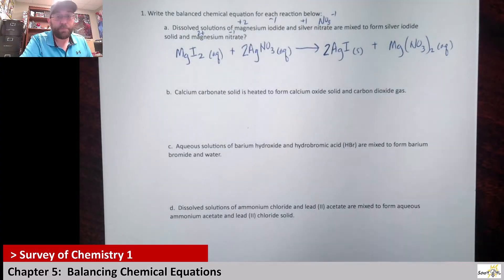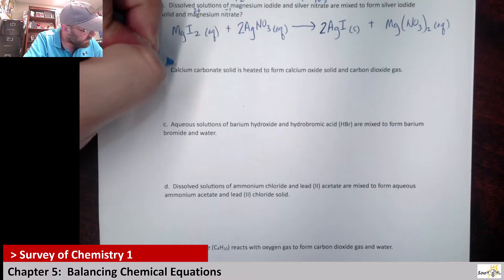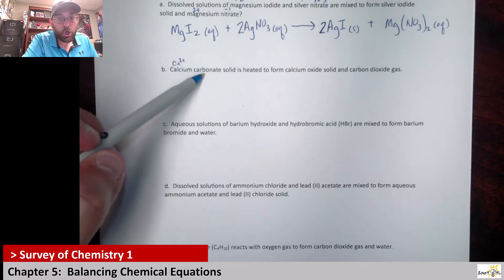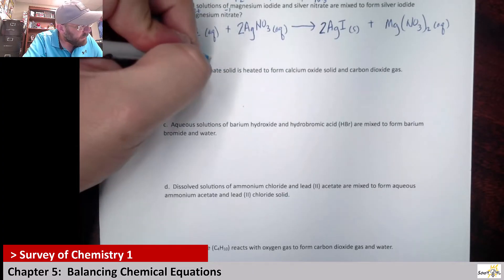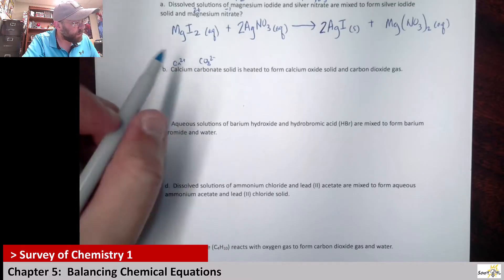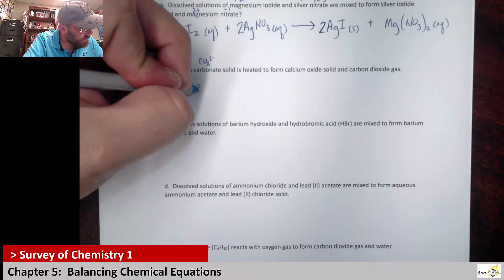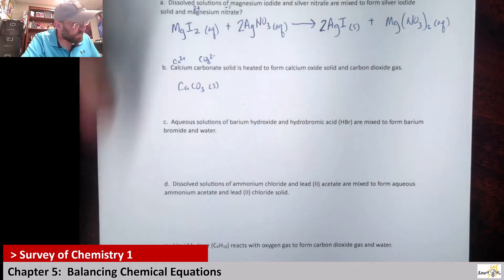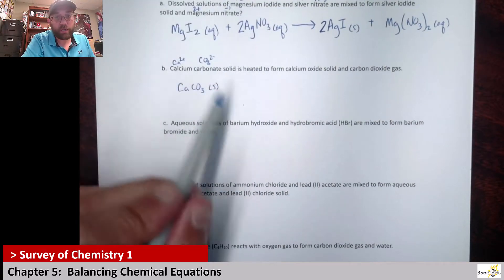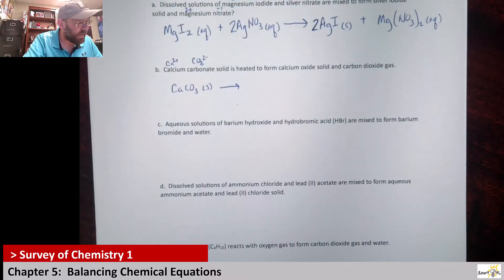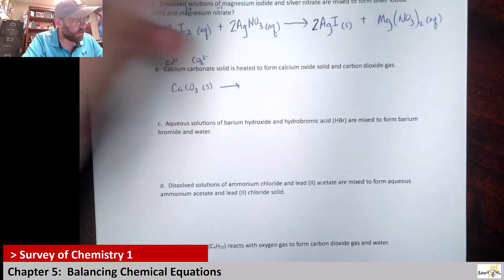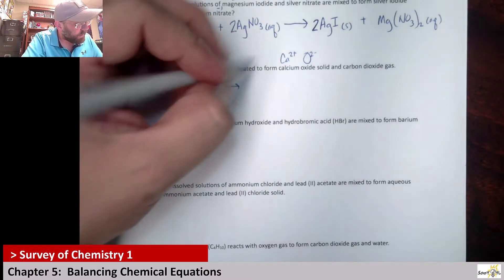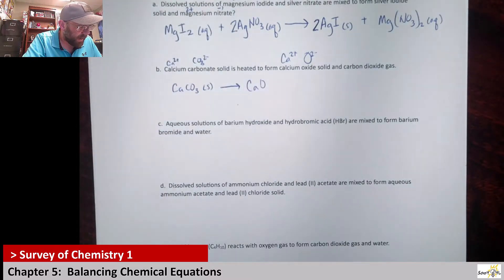Next up: calcium carbonate. Calcium has a 2+ charge; carbonate is CO₃ with a 2− charge. Since 2+ and 2− balance, it's a 1-to-1 ratio — CaCO₃, solid. It's heated as the only reactant to form calcium oxide and carbon dioxide. Calcium oxide is Ca²⁺ and O²⁻, so CaO, solid.